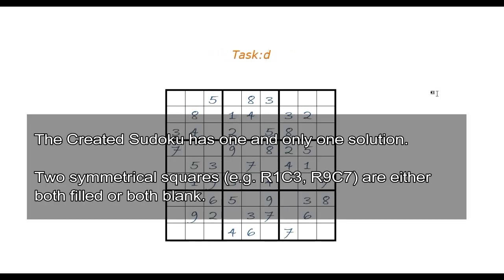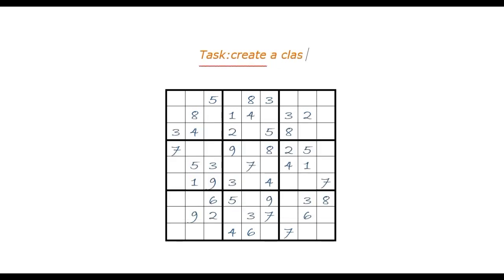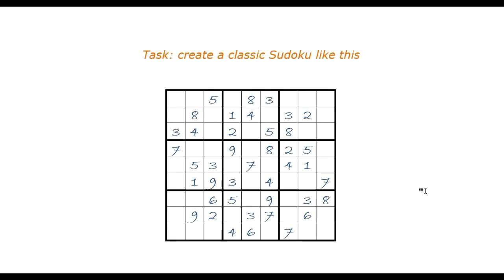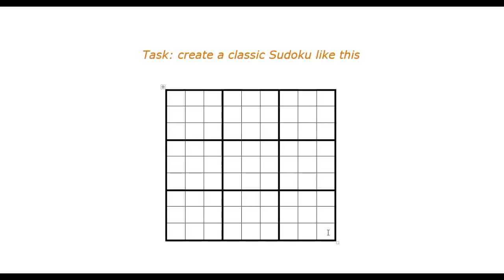And two symmetrical squares are either both filled or both blank. For example, a square at row one, column three — its symmetrical square would be row nine, column seven.